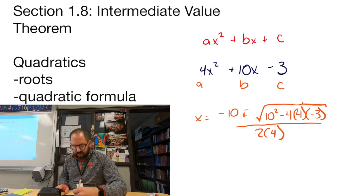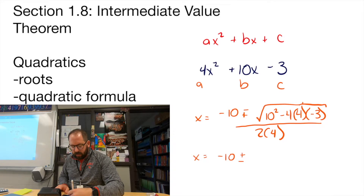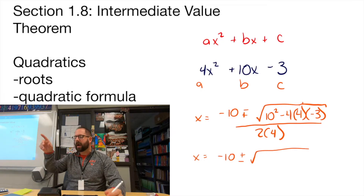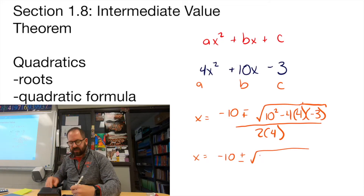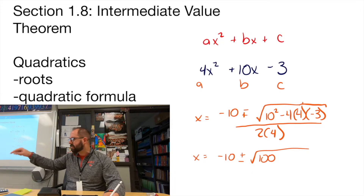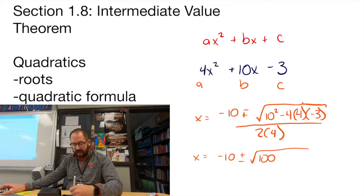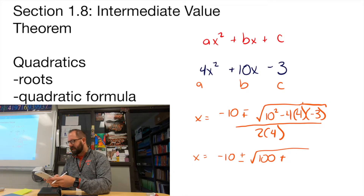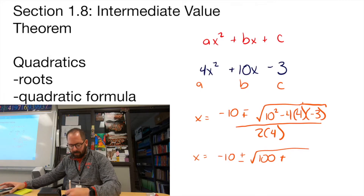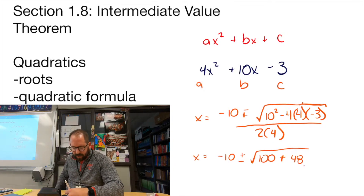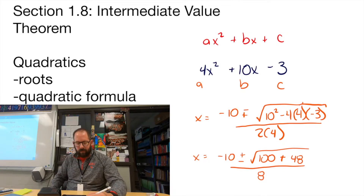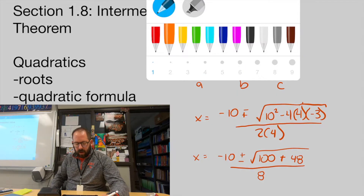Now if we go to this next step, we have negative 10 plus or minus the square root. Here's what we have: 10 squared is 100, because it's 10 times 10. And then 4 times 4 times 3 — there are two negative signs there, negative 4 times negative 3 — so this ends up being a positive number. That's 16 times 3, which is 48. All divided by 8.